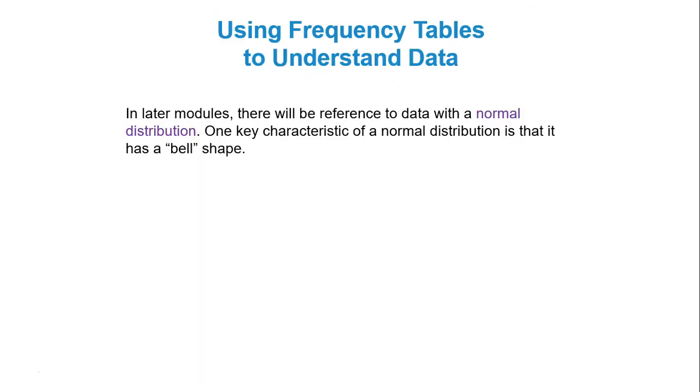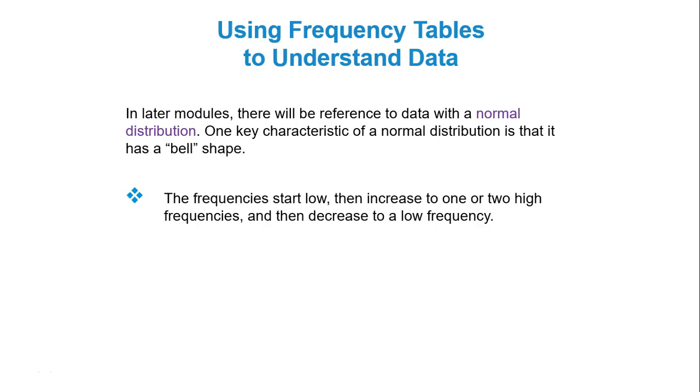So using frequency tables to understand data. In later modules, there will be a reference to data with a normal distribution. One key characteristic of a normal distribution is that it has what is known as a bell shape, and I will now define what that is for you. So a bell shape, or normal distribution, means the frequencies start low, they get high, and then they get low again.